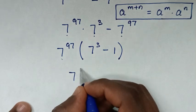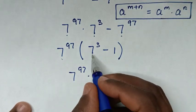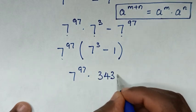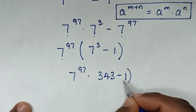Then it will be 7 power of 97, then times 7 power of 3 is 343, then minus 1 bracket.